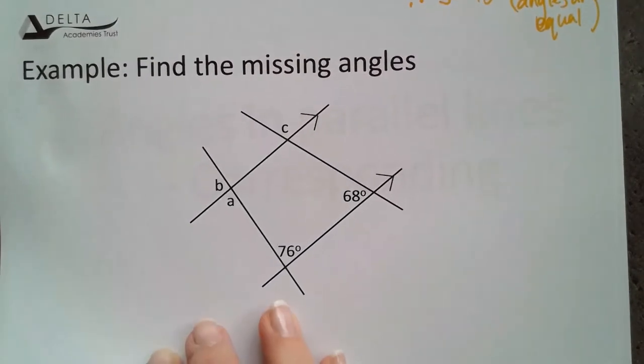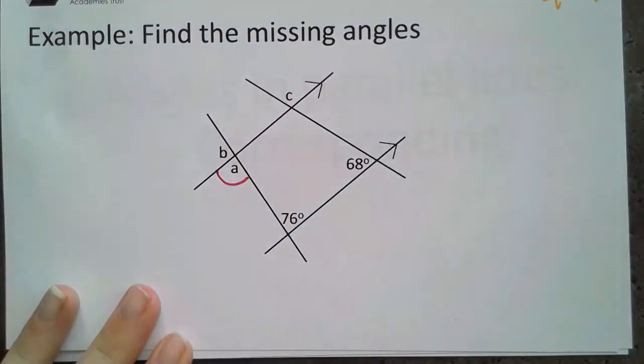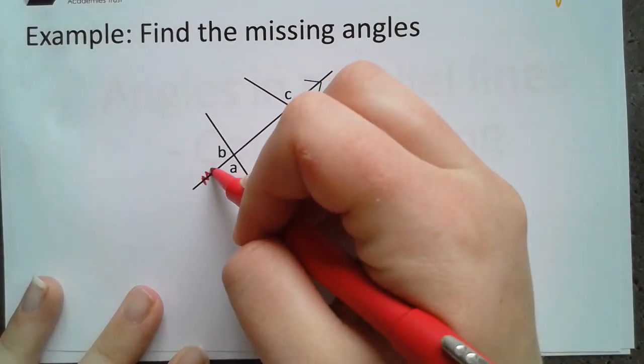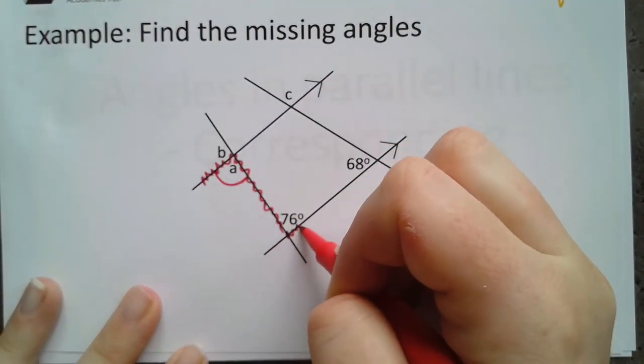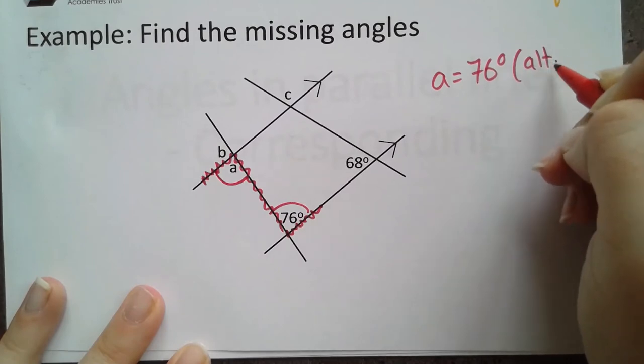Okay, let's have a look at some more problems. If you haven't already tried this one, can you please pause the video and try it now. There are lots and lots of different ways to answer this question. So if we were to start with a, it kind of follows through that the letters might be done in the order that we need. So a here is, if we look at that z shape, in this z shape here to be alternate to the 76. So a is 76 degrees. That's because alternate angles are equal.